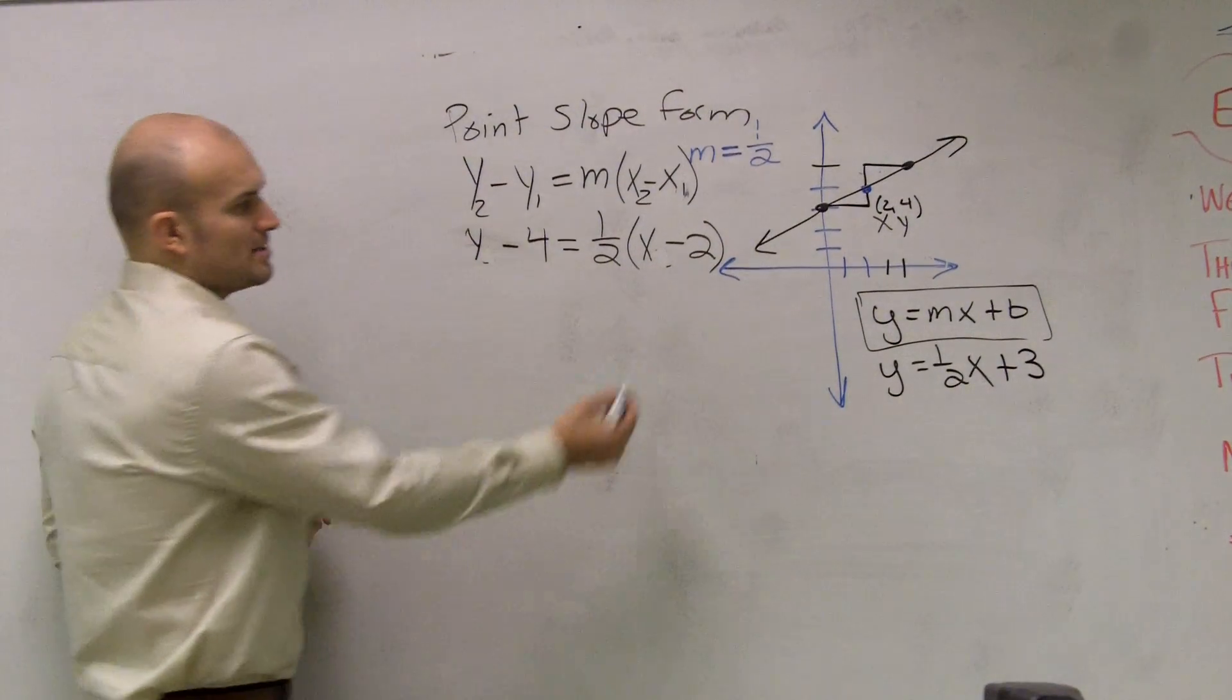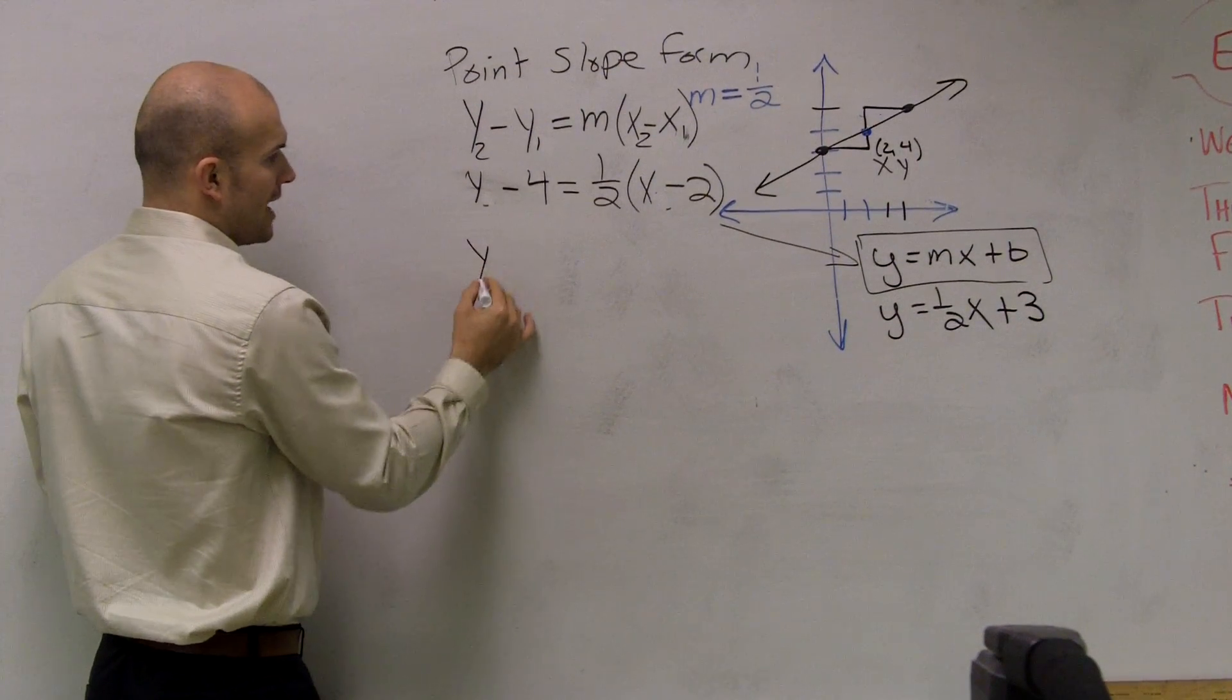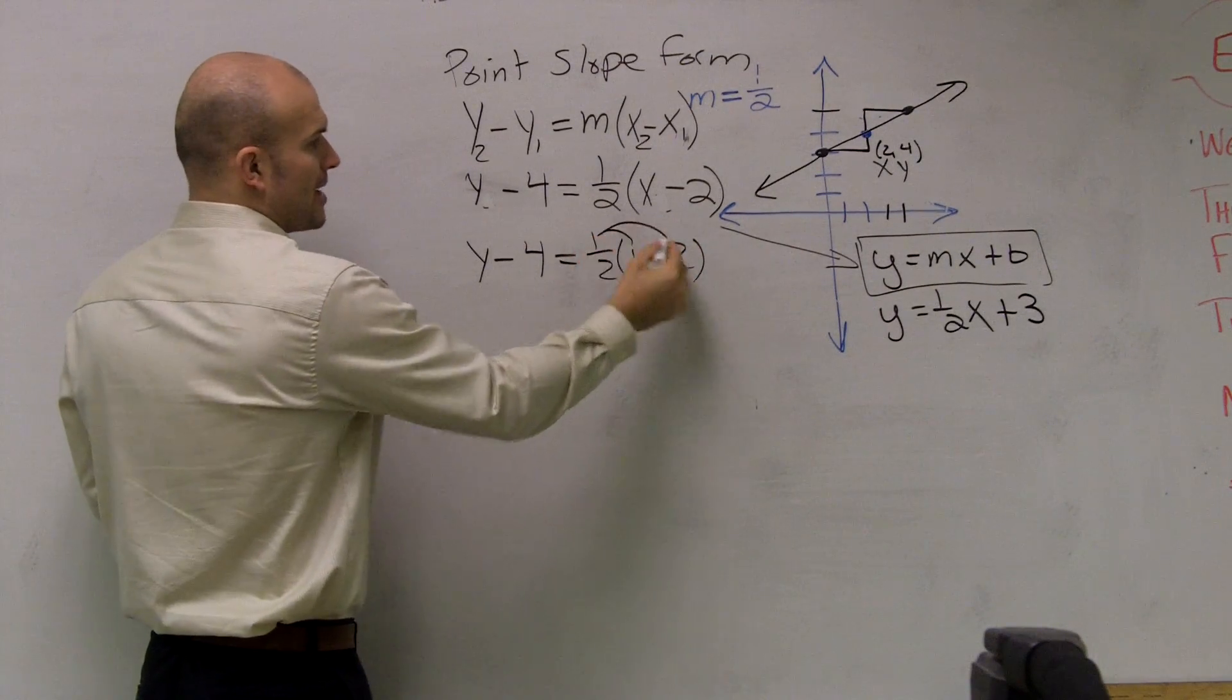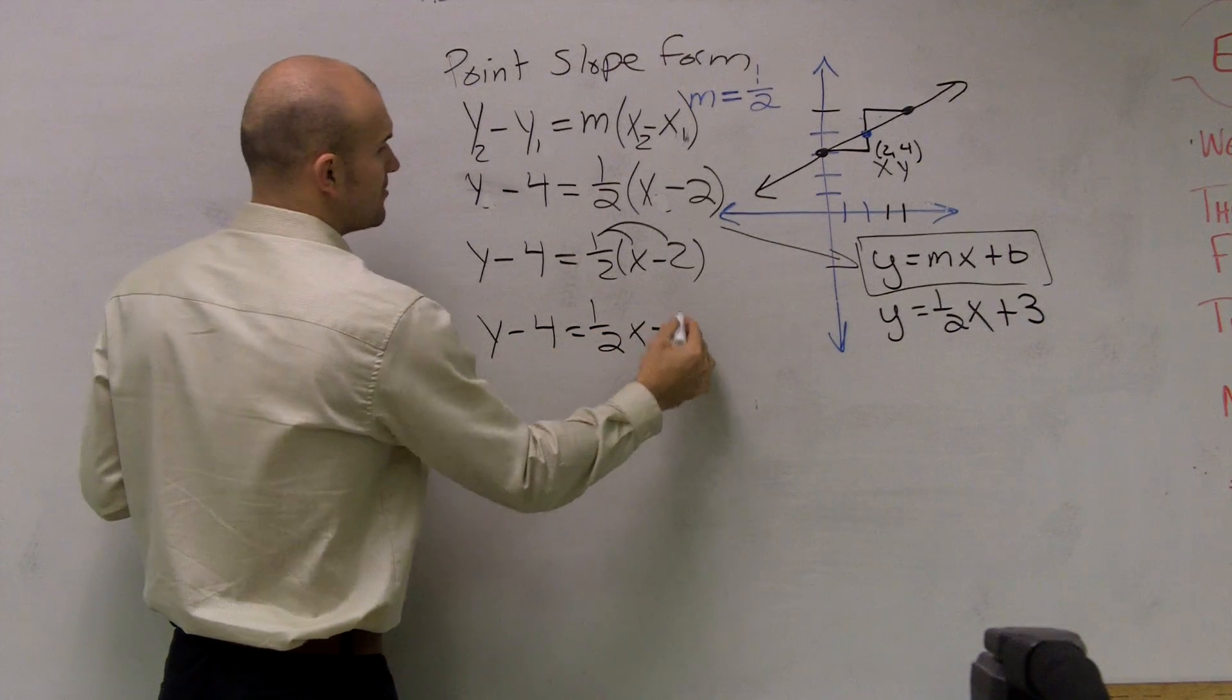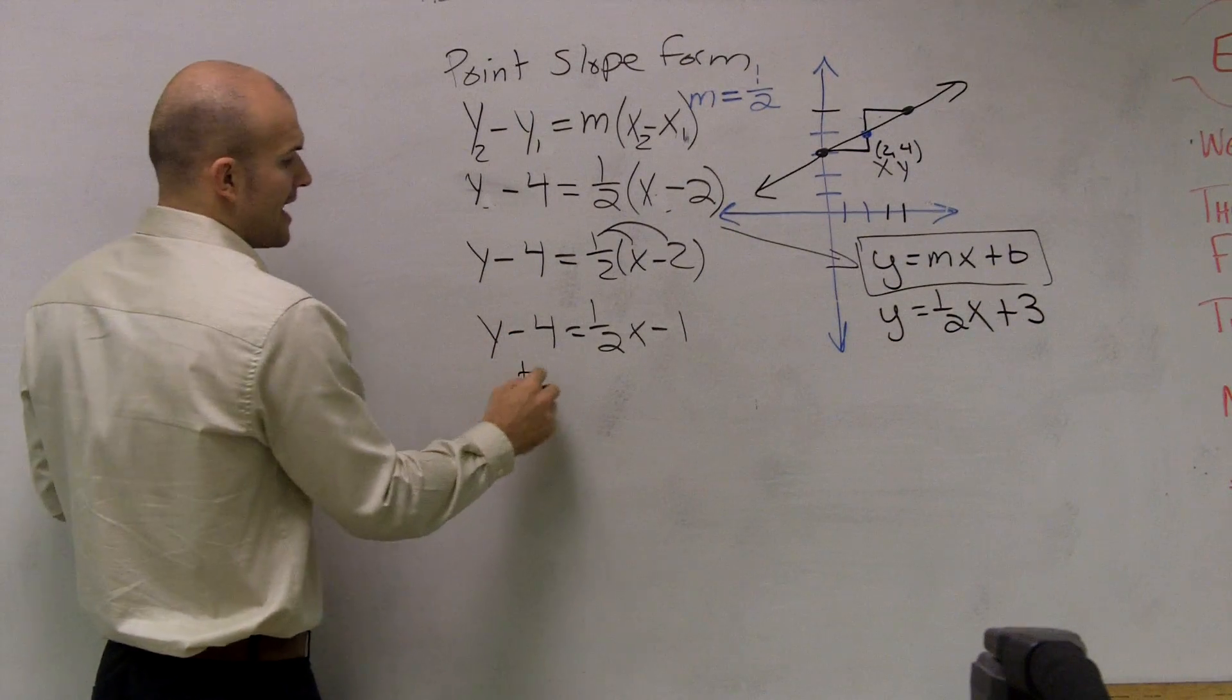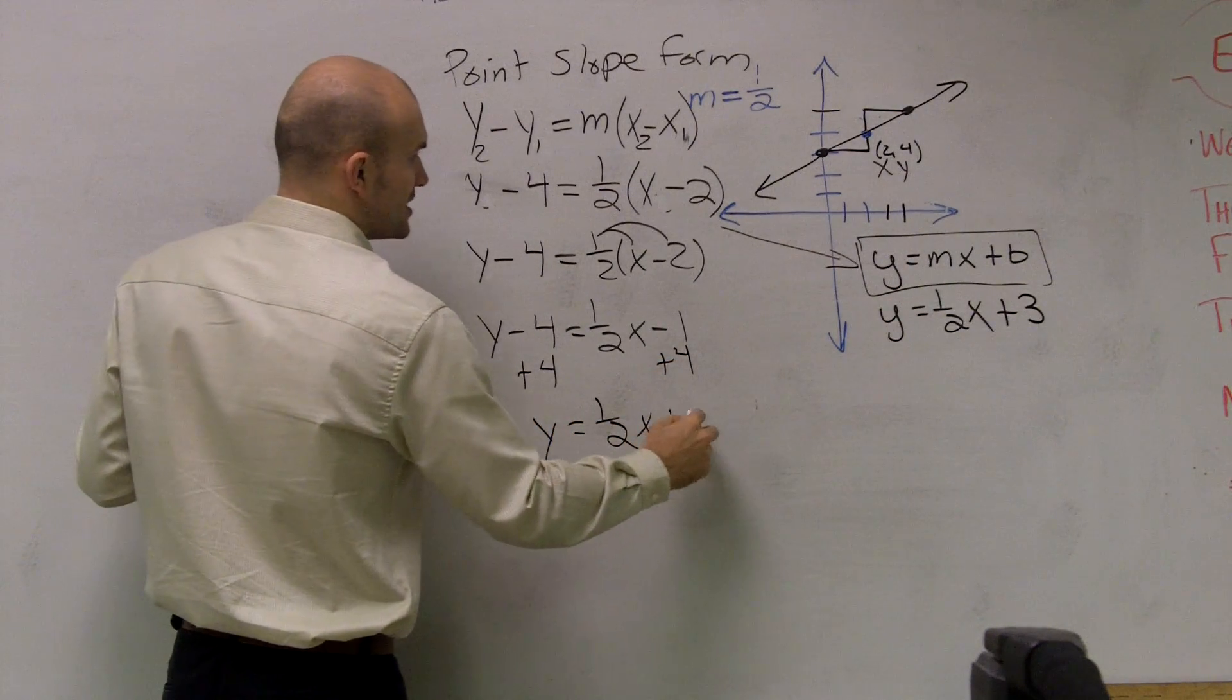So now what we need to do is we need to put it in slope intercept form. So I need to solve. So I can say y minus 4 equals 1 half x minus 2. First thing I want to do is do the distributive property. y minus 4 equals 1 half x minus 1. Then the next thing, I need to get this y by itself, right? So what's left on this y? y minus 4. To undo that, I need to add 4. Therefore, I get y equals 1 half x plus 3.